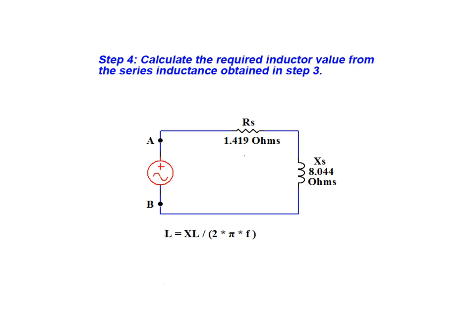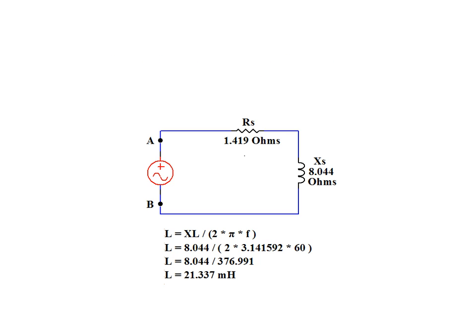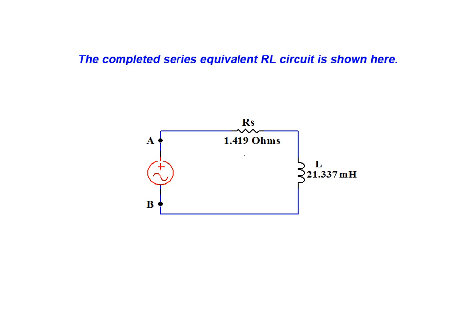To complete the conversion we calculate the required inductor value from the series inductance obtained in step 3. From this calculation we can see that the required inductor value is 21.33 millihenries. The completed series equivalent RL circuit is shown here.